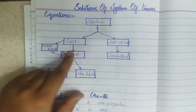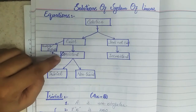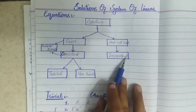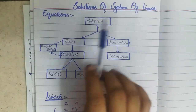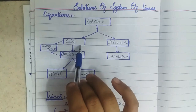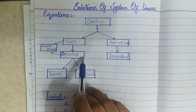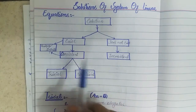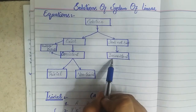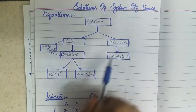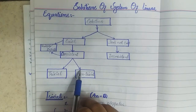Now we will discuss another term: consistent or inconsistent system. If a solution of a system of linear equations exists, then we say the system is consistent. But if the solution doesn't exist, then we say it has an inconsistent solution. This consistent solution may be of two types: either trivial or non-trivial.